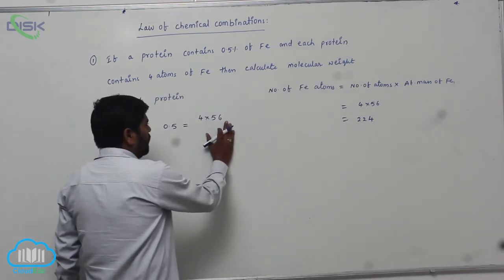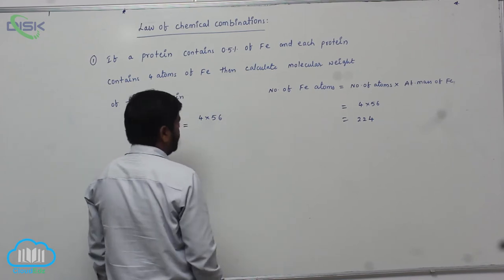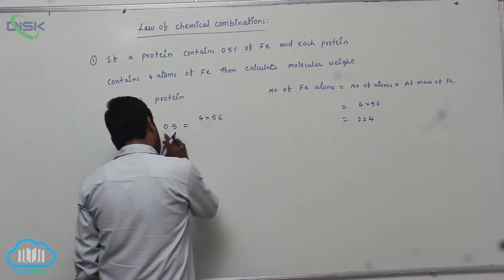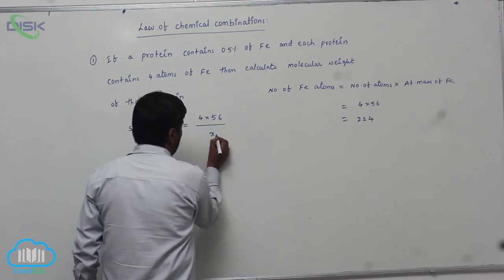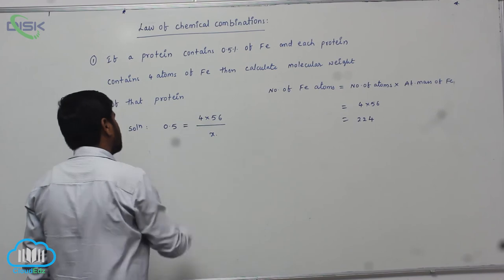Now, this is the weight of iron atoms. This is the percentage. This is the weight of iron atoms divided by the weight of the protein, which we don't know - x.